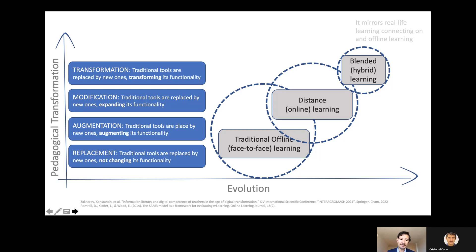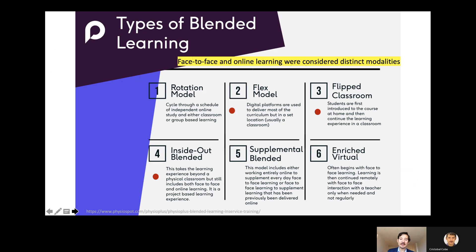As you can see in this graph, we can have technology that simply replicates traditional learning, but with technology we can also augment some learner capacities through tools. We can go further — we can really expand the capacities of the learner and teacher with technology, and we can truly transform. That means to some extent mirroring a real-life learning experience, connecting on and offline learning in a much more fluid way to facilitate greater diversity.